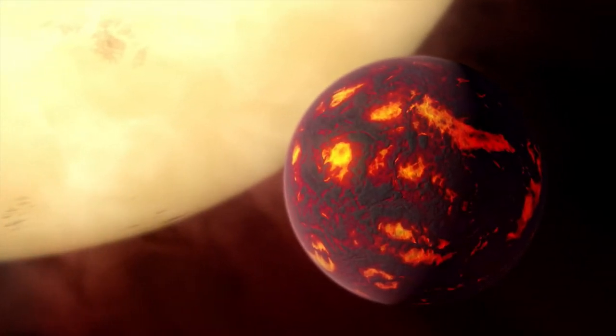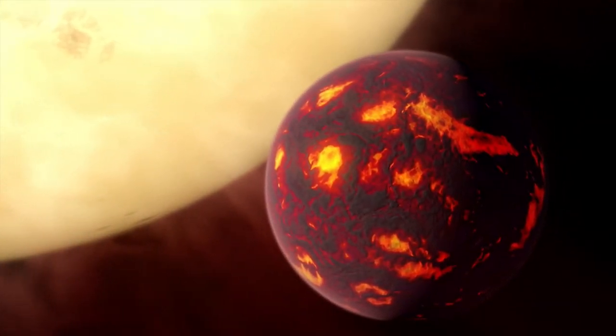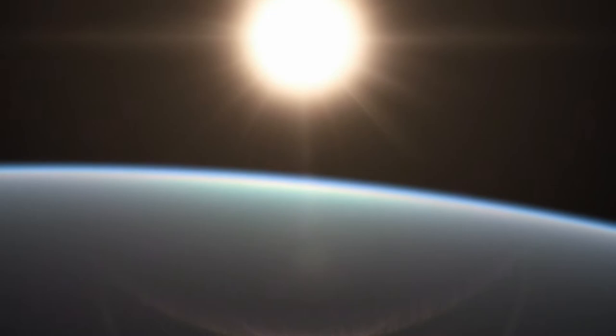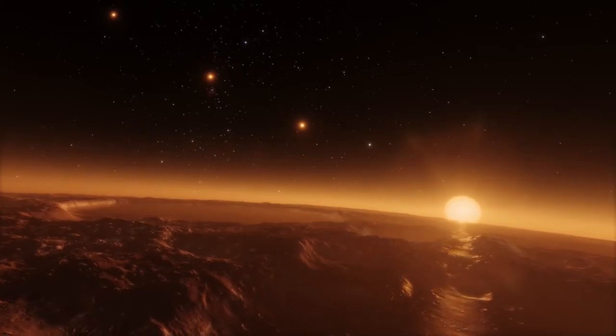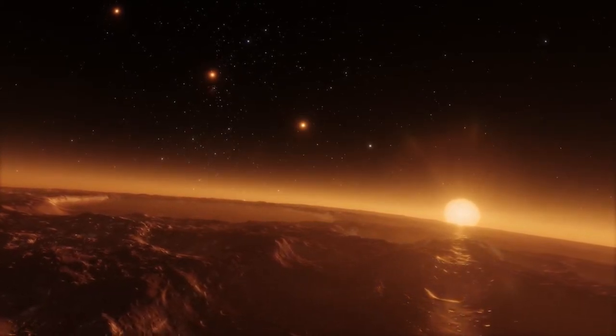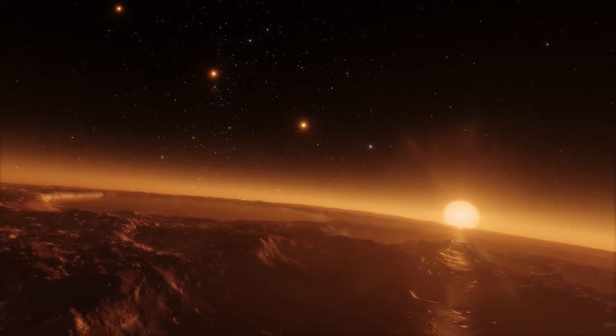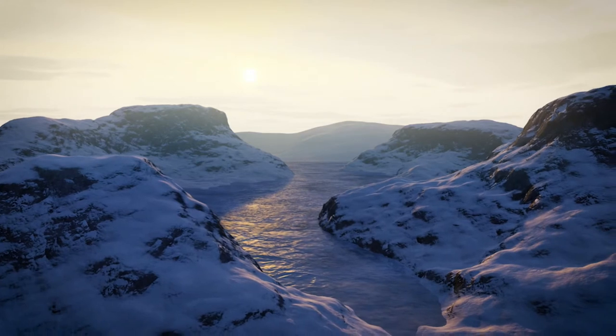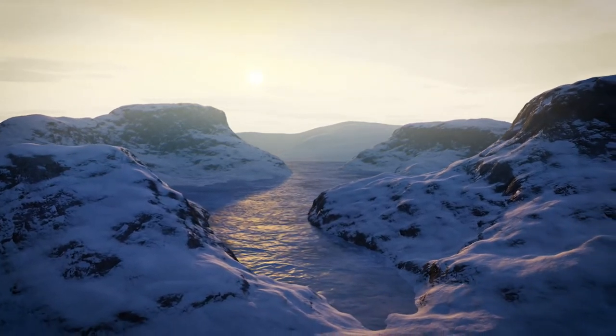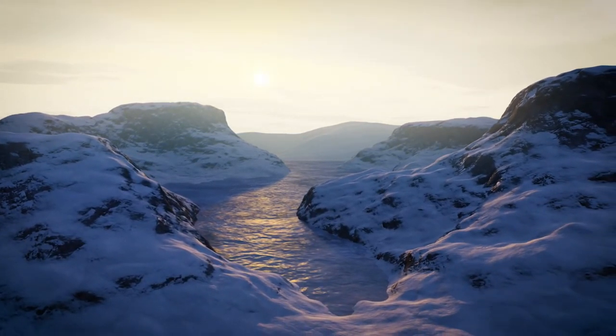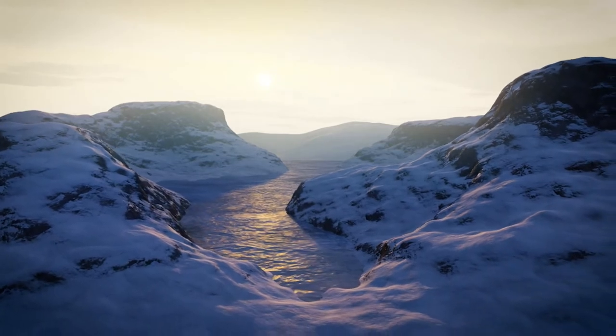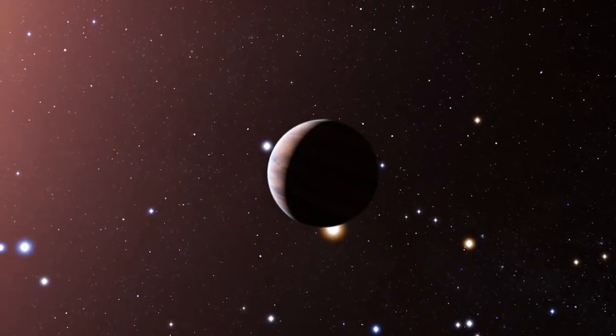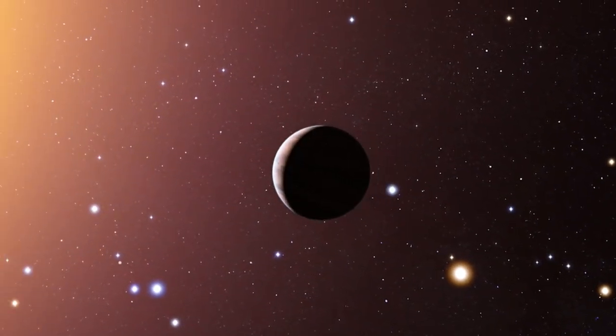Until July 2020, TESS identified more than 2,000 exoplanet candidates, though only 66 have been confirmed. In August 2020, a group of researchers from the University of Warwick published that for the first time, an AI algorithm identified 50 exoplanets out of a list of 8,000 exoplanet candidates. The possibility to identify exoplanets through AI will lead the way for a faster confirmation of exoplanet candidates.